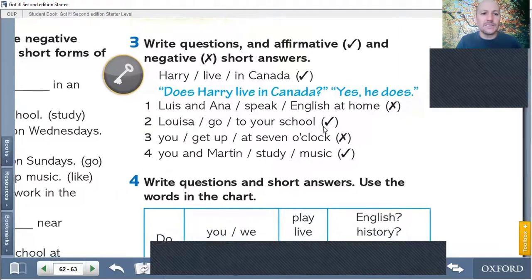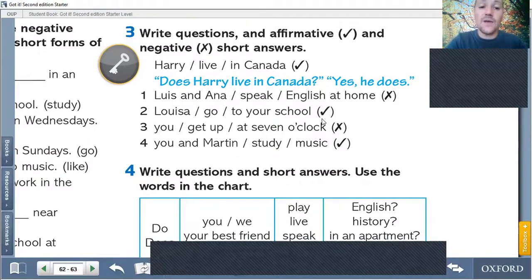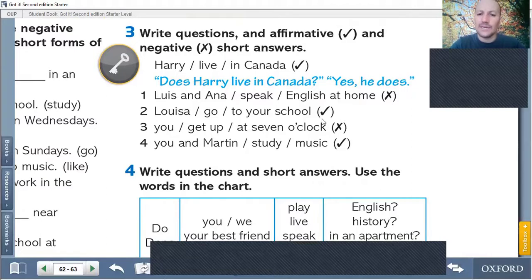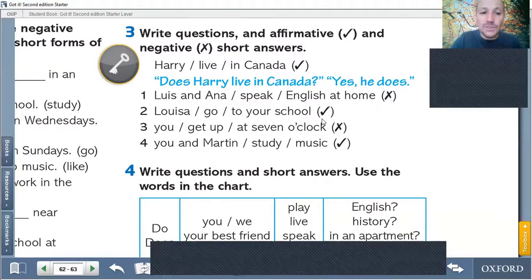Then let's go with the exercise number three. We almost finished. Write questions and affirmative with the tickets and negative with cross with short answers. So, example, Harry live in Canada. In brackets, the tickets. Does Harry live in Canada? We use does because Harry is he, third person singular. So we use does for the question. Does Harry live in Canada? Answer? Short answer? Yes, he does. Very good. So you're going to use the same structure to the four exercises below.